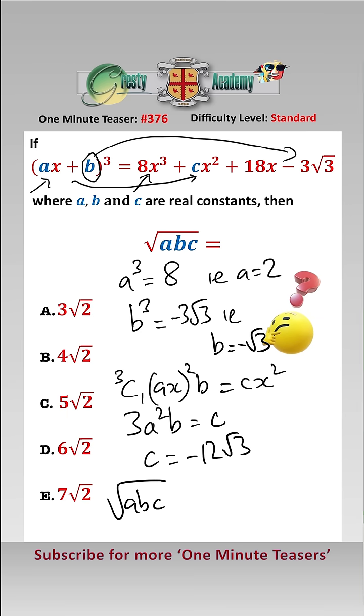Therefore, the square root of abc is equal to the square root of 2 times minus root 3 times minus 12 root 3, which equals 6 root 2, which is answer D.